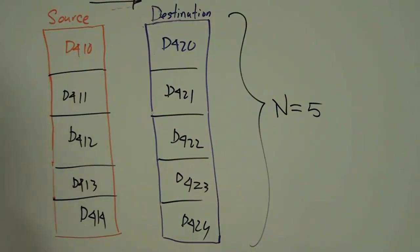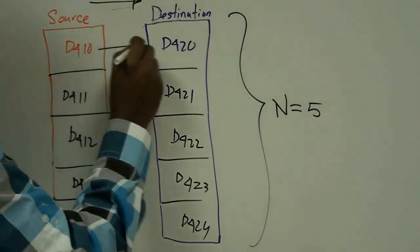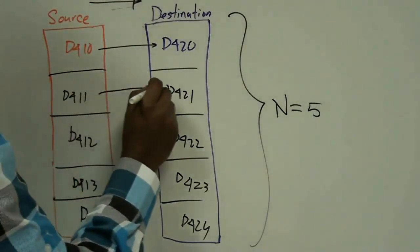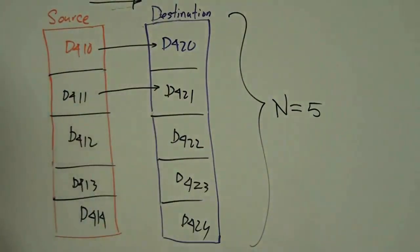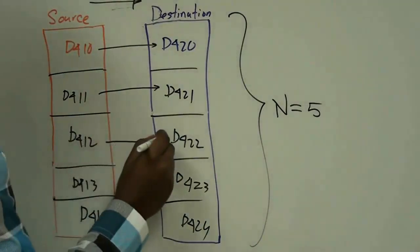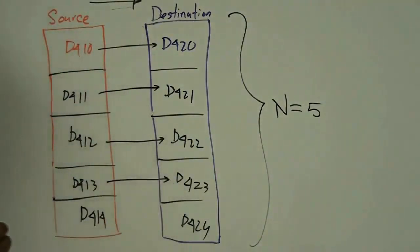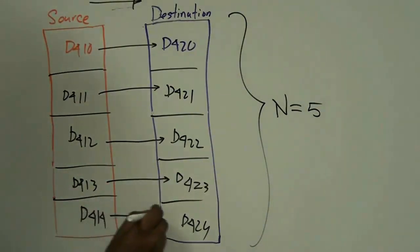So, the value in D410 will move to D420, D411 to D421, D412 to D422, D413 to D423, D414 to D424.